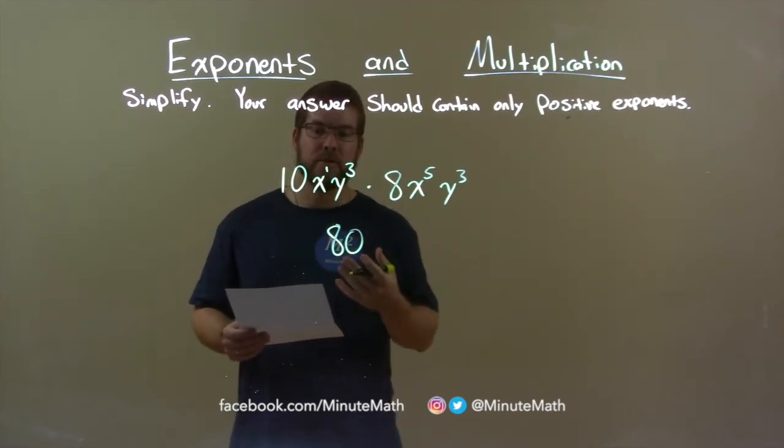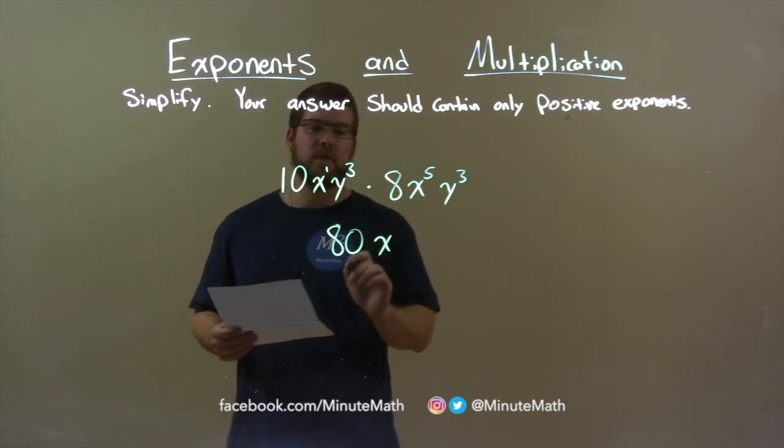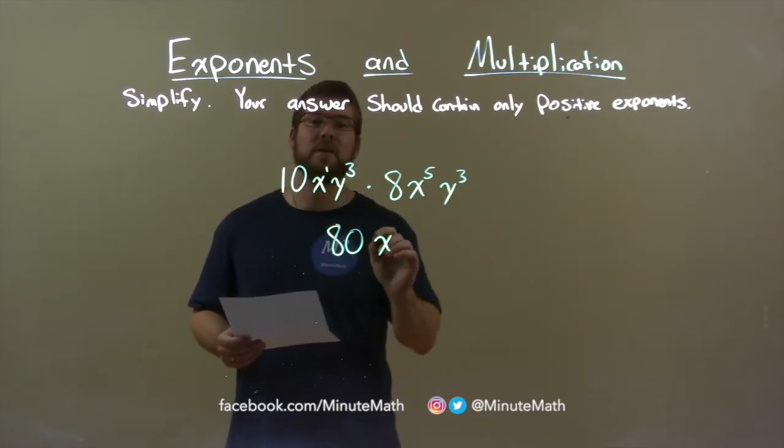We can only multiply like terms. We keep the base the same, and we add the exponents. 1 plus 5 is 6.